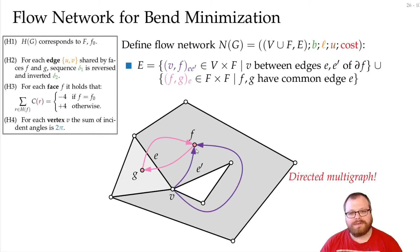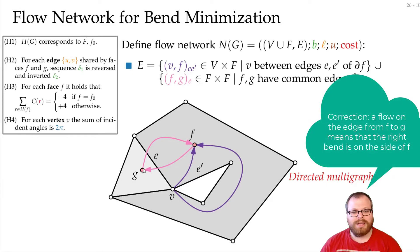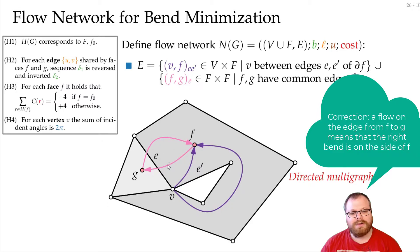The flow on these edges is supposed to describe the bends. A flow of 1 from a vertex to a face means a 90-degree angle there; a flow of 2 means a 180-degree angle. Between faces, a flow of 1 from face G to a neighboring face means one right bend on edge E on that side. A flow of 3 means three right bends on that side. Conversely, a flow of 4 from G to another face means four right bends on the other side. So three outgoing and four incoming from G would mean three right bends and four left bends.